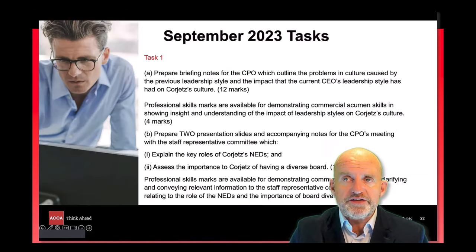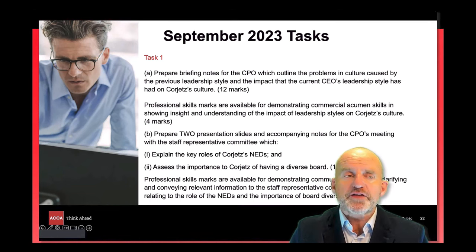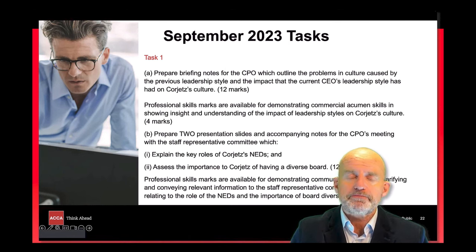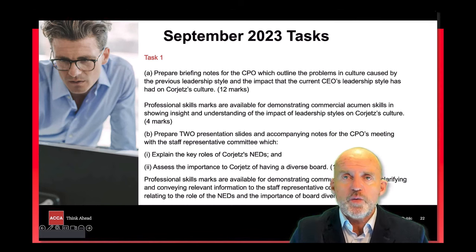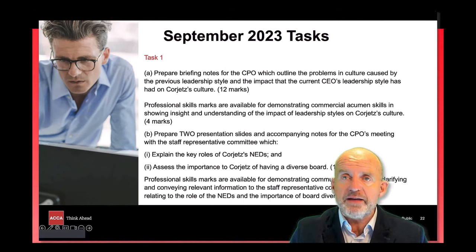In the September 2023 sample exam, task one consisted of two main tasks. The first task required us to outline the problems caused by the previous leadership style and the impact the current CEO's leadership style has had on CoreJet's culture. The pre-seen mentioned CoreJets was originally founded by two entrepreneurs with their own entrepreneurial management style, but they'd since retired and the company had floated on the stock exchange. This, coupled with the information in the new exhibit, would have assisted you in scoring well in this question.